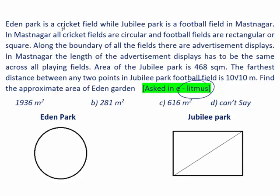Eden Garden is a cricket field whereas Jubilee Park is a football field. So as we all know, cricket field is circular and football field is rectangular. Now he said that along the boundary of all the fields there is an advertisement display and these are same across all the fields. Means the perimeter of this is equal to the perimeter of this.